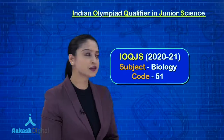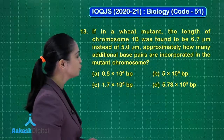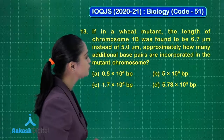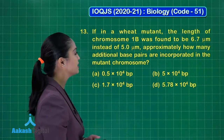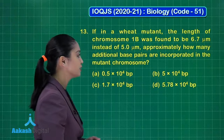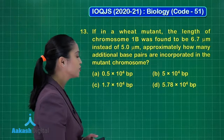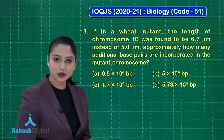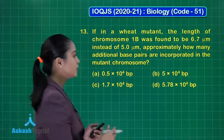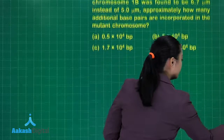Let's look at the first question. In a wheat mutant, the length of chromosome 1B was found to be 6.7 micrometers instead of 5 micrometers. Approximately how many additional base pairs are incorporated in the mutant chromosome? We are given four options. To solve this question, we must first know the distance between two base pairs.